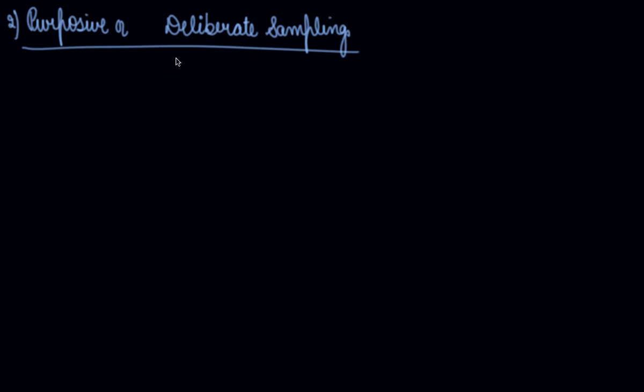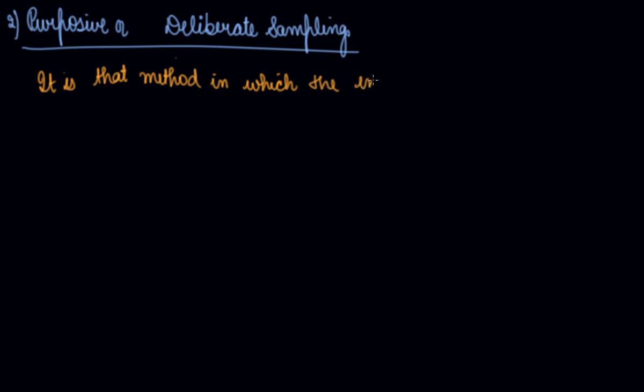The second type of sampling is purposive or deliberate sampling. Purposive sampling is that method in which the investigator himself makes the choice of which items are to be taken into the sample or which are to be eliminated from the sample. It is your choice as an investigator — according to your knowledge, you select the items of the sample.